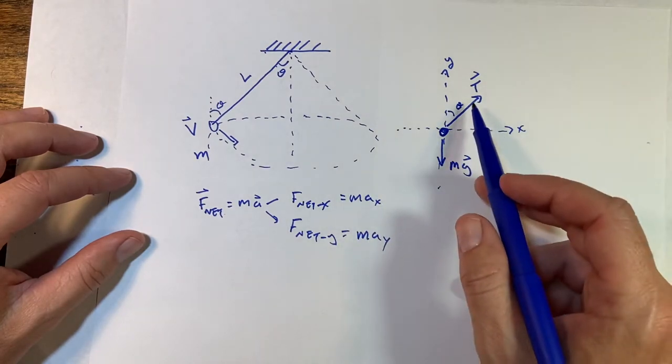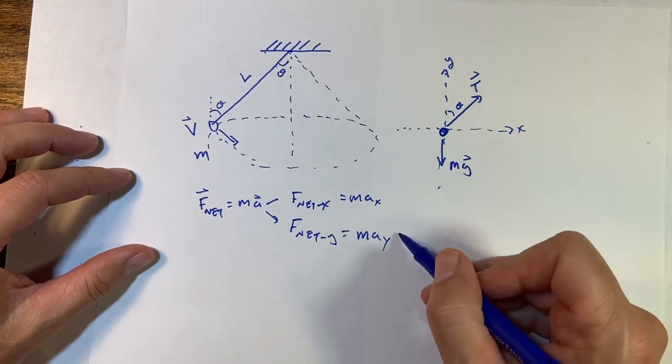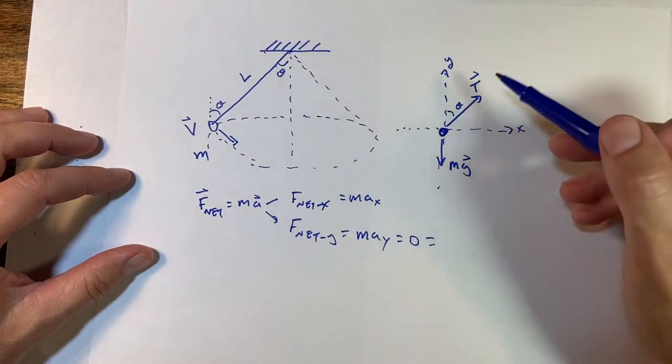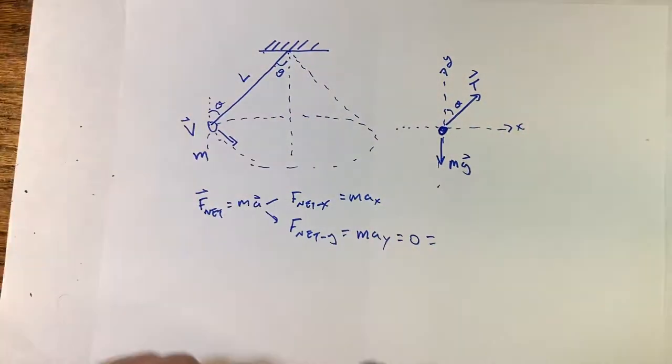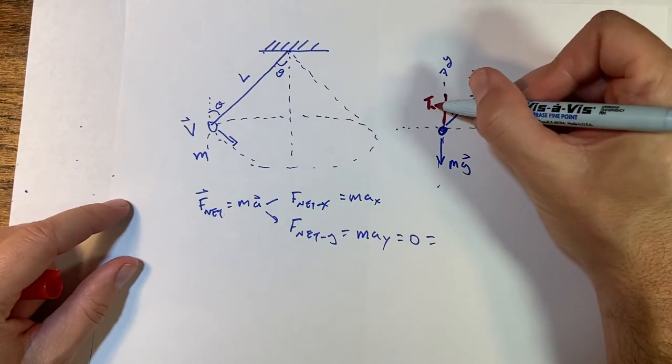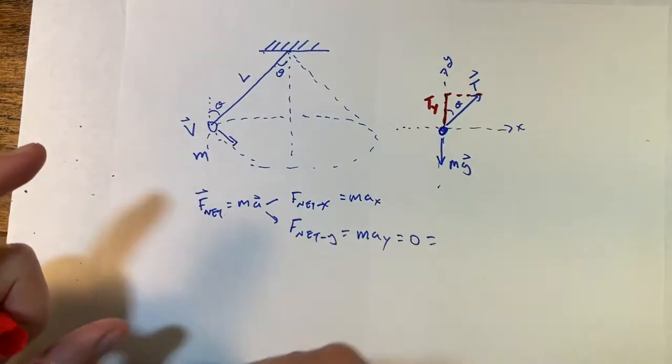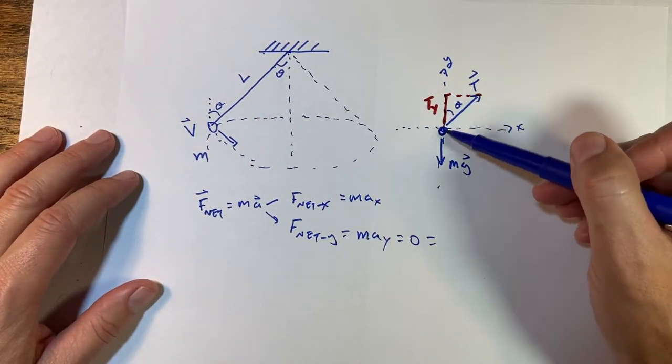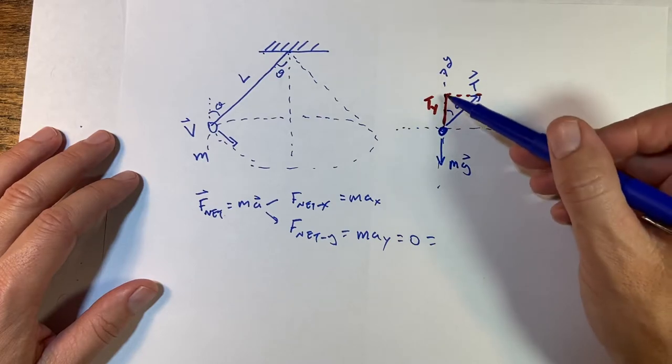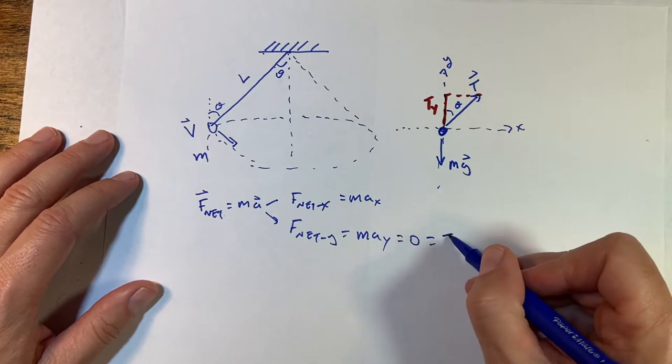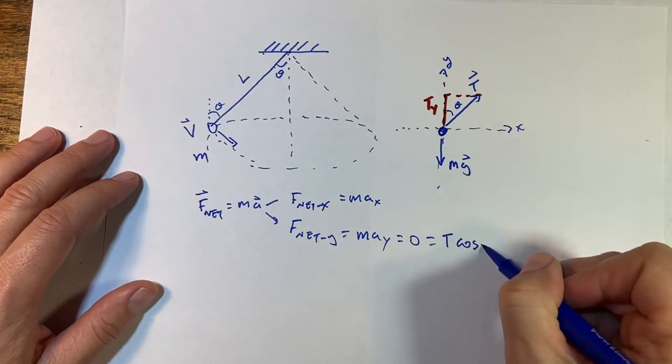So let's look at the y first. What forces do we have in the y-direction? I know this is equal to zero. And so what forces do I have? Well, I have part of the tension right there. And you'll see here that this is the adjacent side of that triangle. So if I have the adjacent side of the triangle to find the y component, this would be T cosine theta.